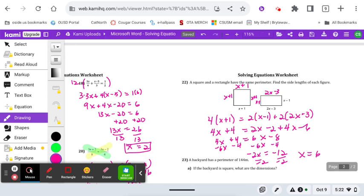Find the lengths of the sides of each figure. Here, just because x is 6, that's not our answer. For this one, the sides of the triangle are x plus 1. So I take my answer of 6, and I do 6 plus 1, so the sides of the square are 7.